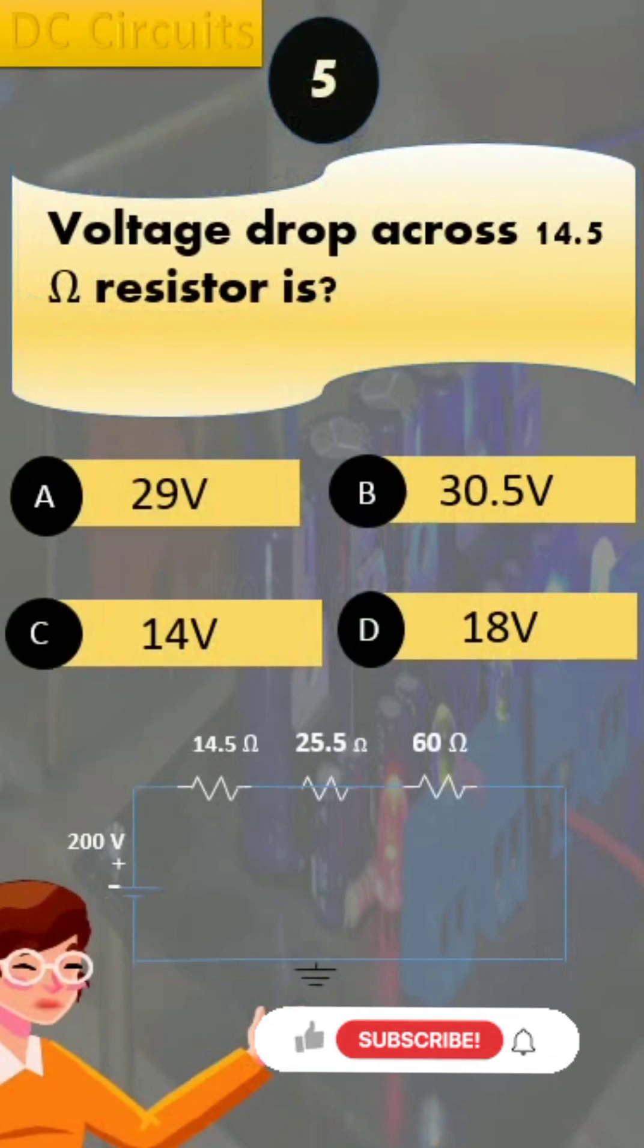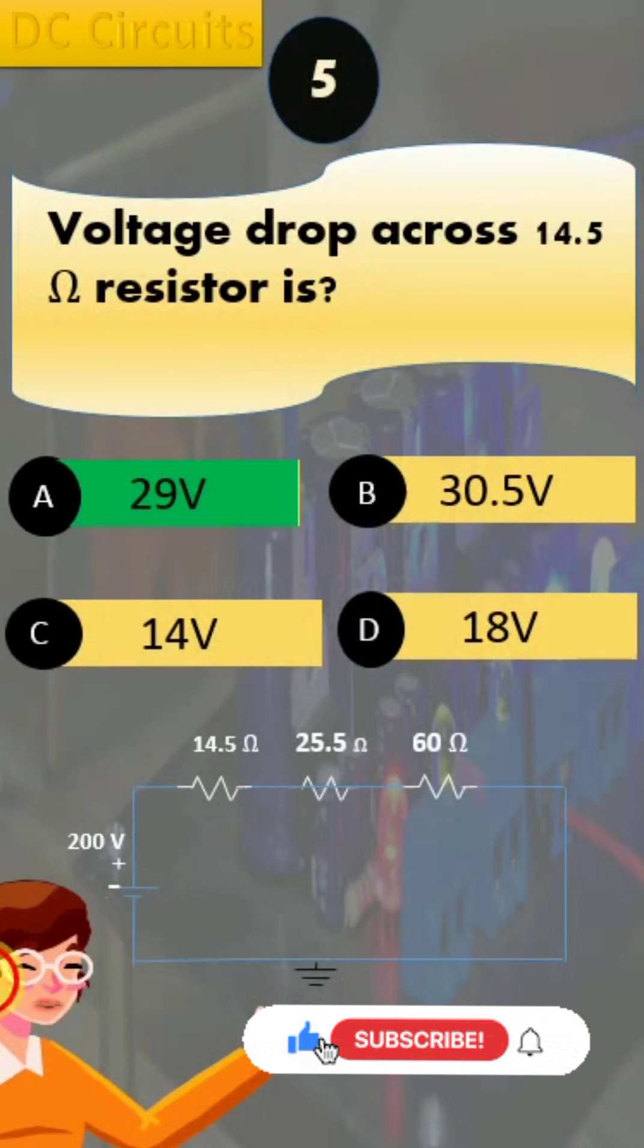that option A is the correct answer since 29 volts is the voltage drop across R1.